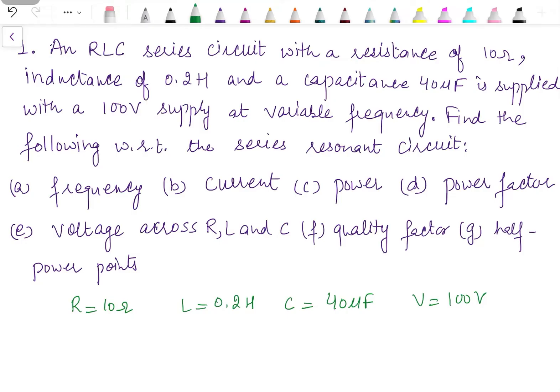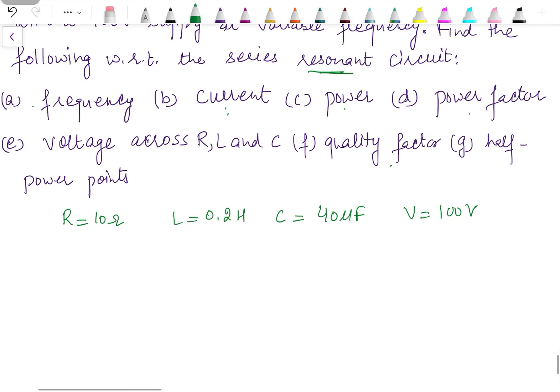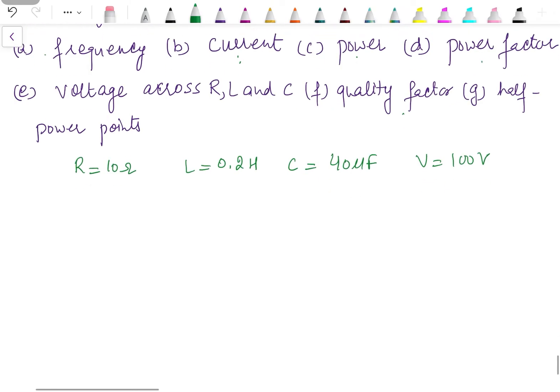We have to find the following with respect to the series resonant circuit: first, the resonant frequency; second, current at resonance; third, power at resonance; fourth, power factor; fifth, voltage across R, L, and C; sixth, quality factor; and seventh, the half-power points — that is, the half-power frequencies. So let's start solving each part one by one.